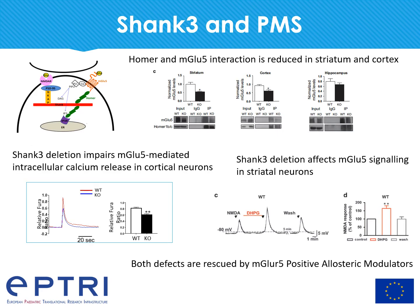Through its proline-rich domain, SHANK3 is able to interact with another scaffold protein, HOMER. The formation of the SHANK3-HOMER complex links the type 1 glutamate metabotropic receptor mGLU5 with its intracellular signaling pathway, leading to more efficient calcium release in response to glutamate activation. We analyzed the interaction between HOMER and mGLU5 in SHANK3 knockout mice, and found specifically in striatum and cortex a significant reduction in the formation of the HOMER-mGLU5 complex at synapses.